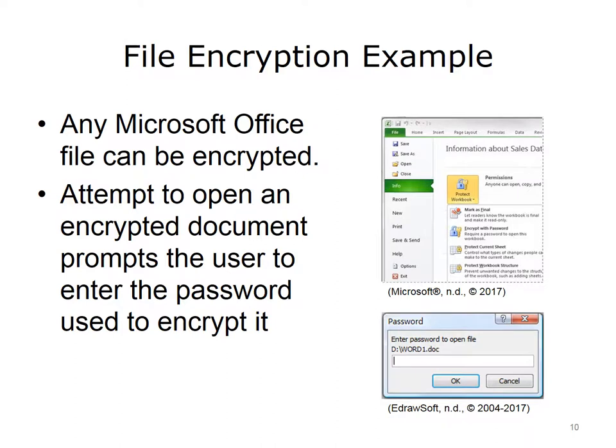Suppose you create, encrypt, and close a Microsoft Word document. When you want to open the document, double-clicking on it opens a password dialog box, shown at the bottom right of the slide. The presence of the password dialog box indicates that the document is protected, or encrypted, and that a password is required to open it. If you type in the correct password, the document will open. If you forget the password, you will be unable to open the document.